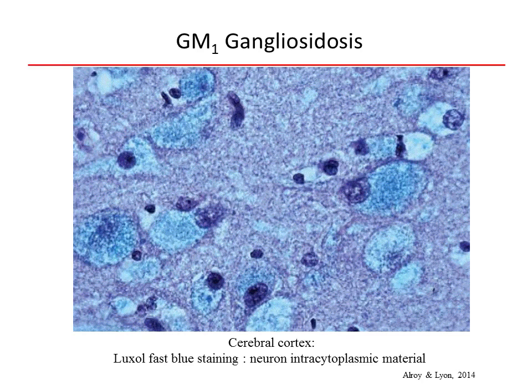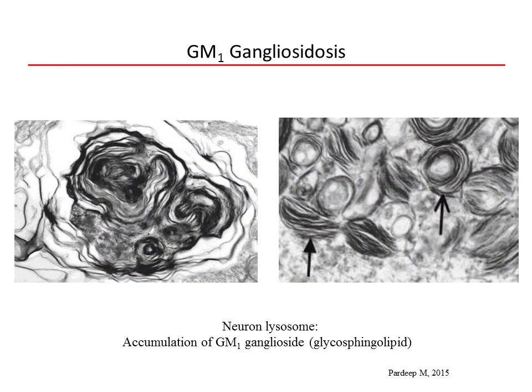The image shows the accumulation of Luxol fast blue positive inclusion materials within the cytoplasm of the neuron. The images show linear and concentric pattern-forming inclusion materials within the neuron lysosome.